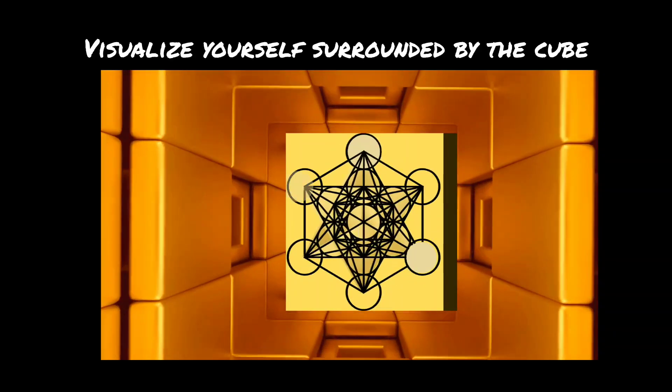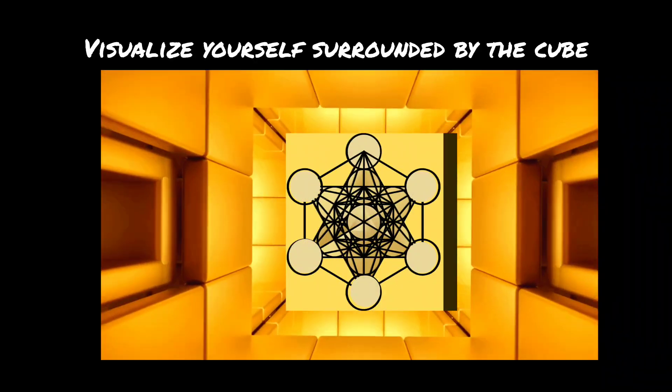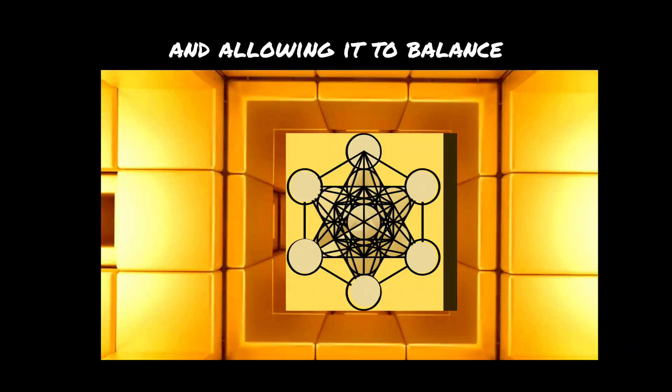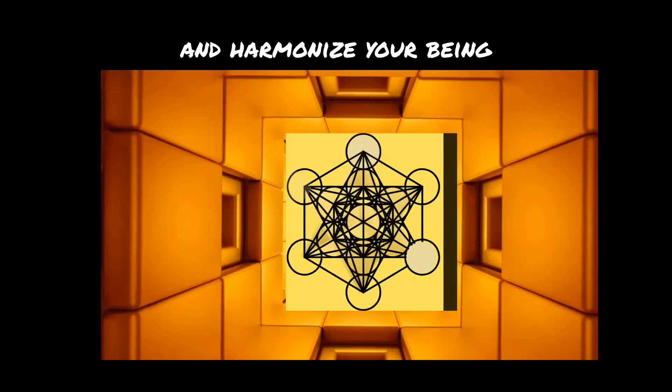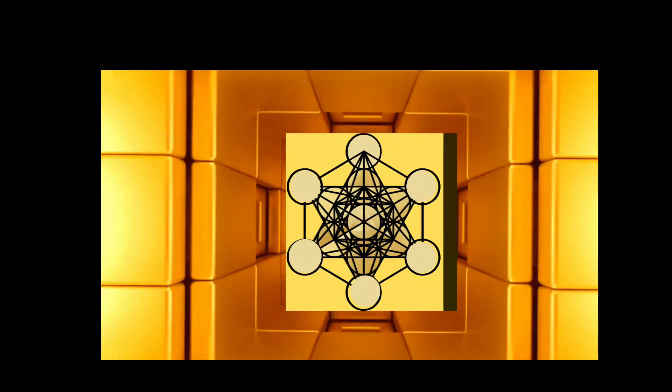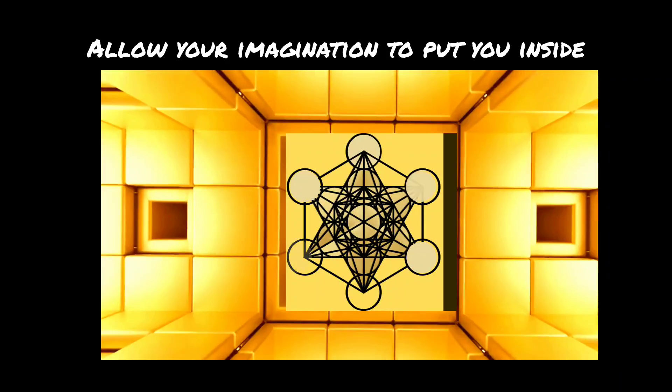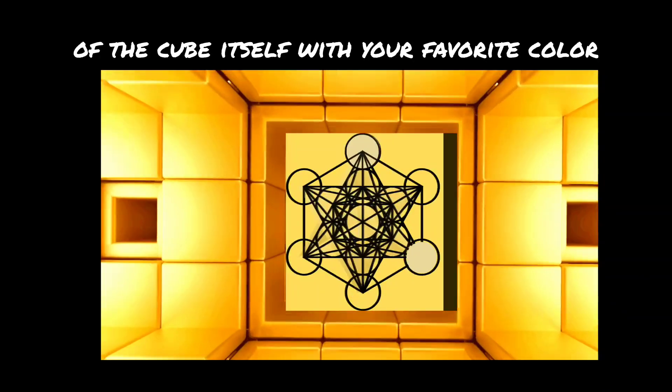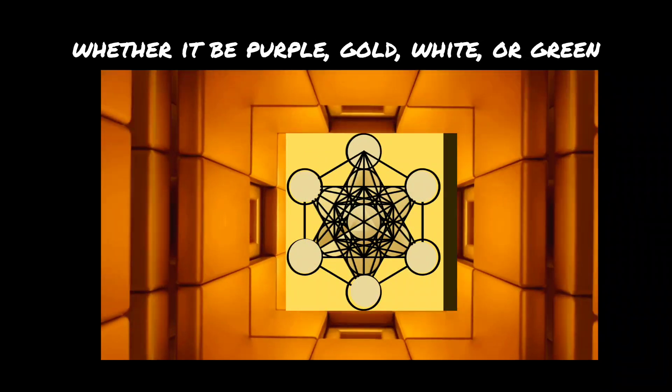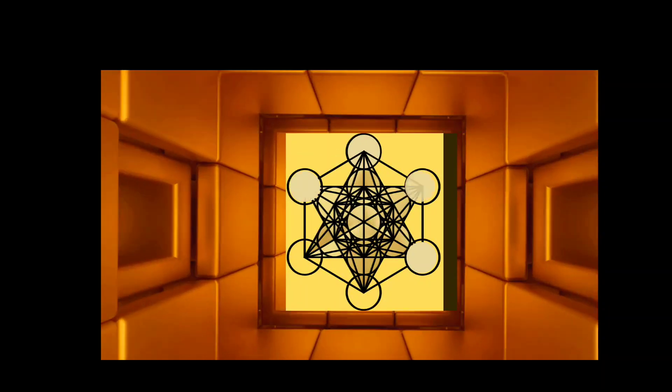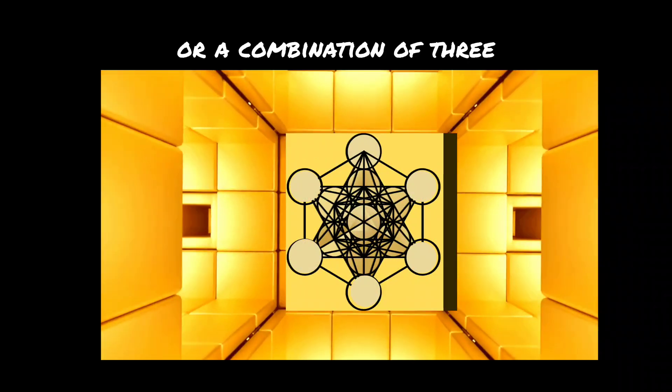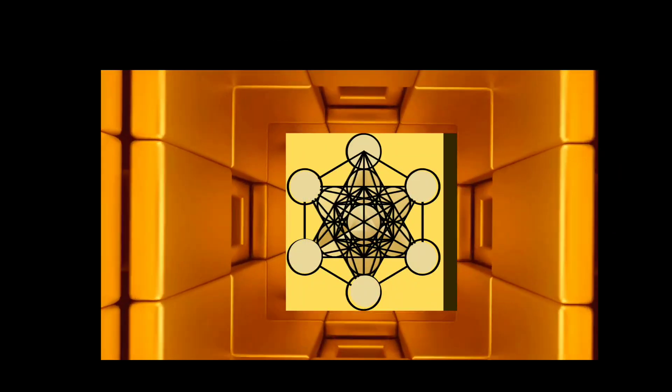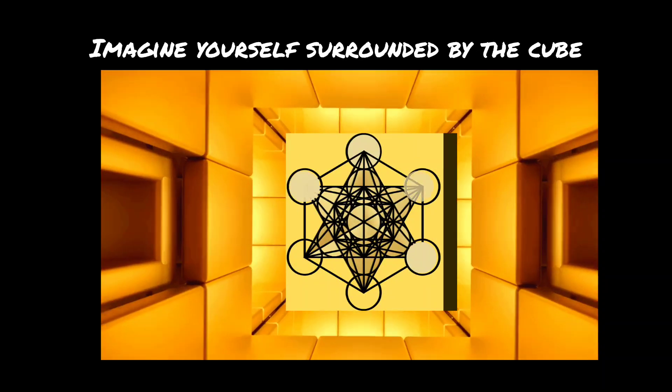Step eleven: visualize yourself surrounded by the cube, feeling its energy all around you and allowing it to balance and harmonize your being. Allow your imagination to put you inside of the cube itself with your favorite color, whether it be purple, gold, white, or green, or a combination of three or four of the colors together. Imagine yourself surrounded by the cube.